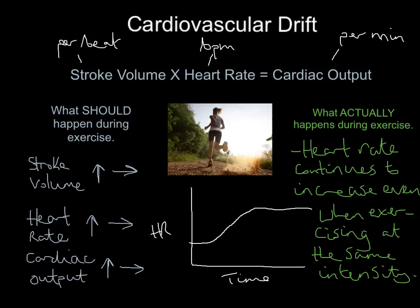What actually happens during exercise is what cardiovascular drift refers to: heart rate continues to increase even when exercising at the same intensity. That shouldn't happen — if you're running at the same speed, heart rate should stay at the same number of beats per minute. But what happens is a continuous increase in heart rate even though you're working at the same intensity, and that's cardiovascular drift.